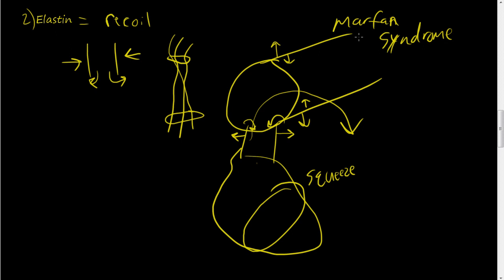Marfan syndrome, just to give you a little taste of what's to come, is a genetic disease where the extracellular matrix isn't up to par. So it affects these vessels, your blood vessels, and the ability to go in and out and adapt to the stress with this elastin component in it.